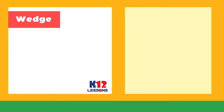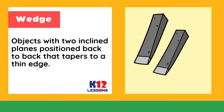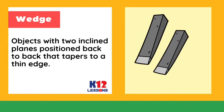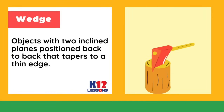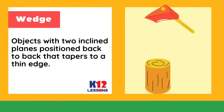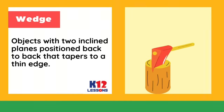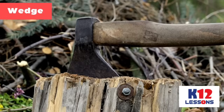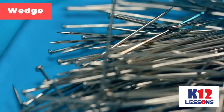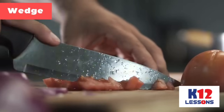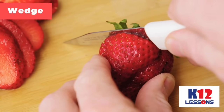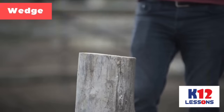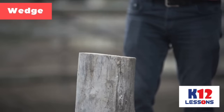Wedge: an object with two inclined planes positioned back to back that tapers to a thin edge. Examples: nails, axes, pins, and knives. Uses: cutting or splitting certain materials apart.